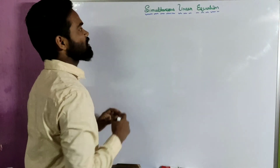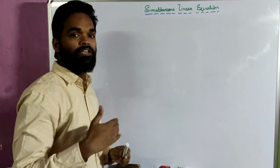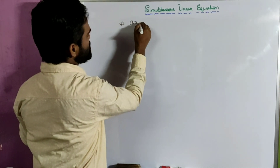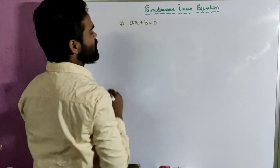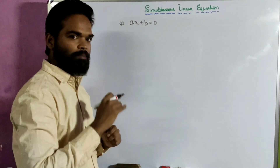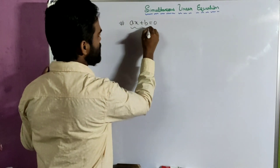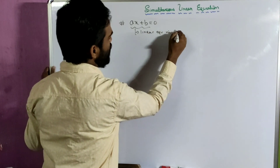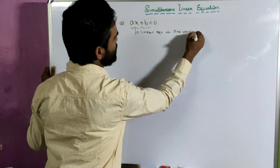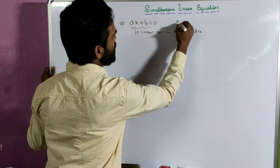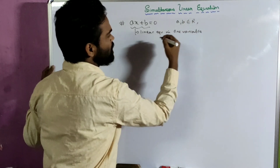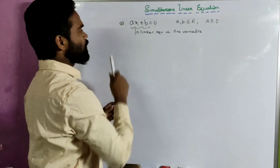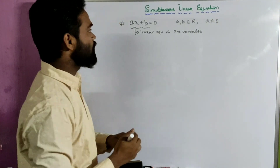Hi class, today our topic of discussion is simultaneous linear equation. Now look at this: ax plus b equals to 0. This we have already done in previous classes. This is a linear equation in one variable, where x is the variable, a and b belong to real numbers, and a is not equal to 0. This type of equation is known as a linear equation in one variable.